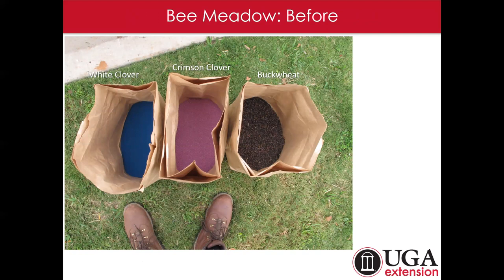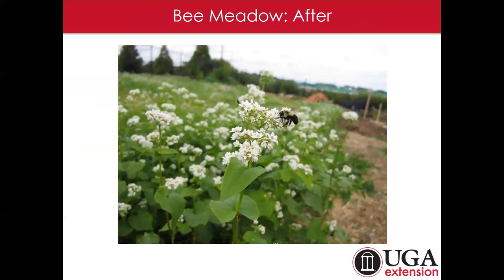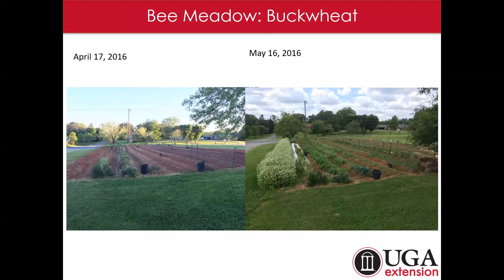Some examples of things you can buy at the feed store: crimson clover, white clover, and buckwheat. Usually you buy these by the pound. With buckwheat, within four weeks you will have a wonderful floral display. Beekeepers may say it's not great honey, but if you're planning on having this in bloom in July or August when nothing else is blooming, it's better than nothing. This is a good example of the growth in a little buffer at the edge of my garden — literally a month later it went from seed in the ground to about three feet tall, sheer blooms. That earlier video of the bumblebee jumping from flower to flower was on this little patch of buckwheat.